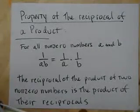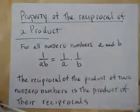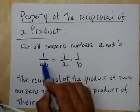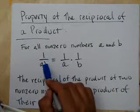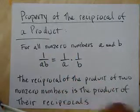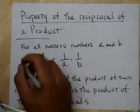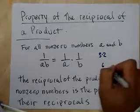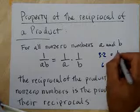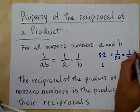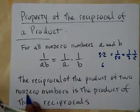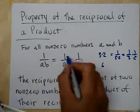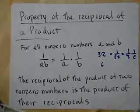Property of the reciprocal of a product. For all non-zero numbers a and b, the reciprocal of a times b — or 1 over ab — is the same thing as 1 over a times 1 over b. So the reciprocal of 3 times 2 is the same as 1 over 3 times 1 over 2. The reciprocal of a product is the product of the reciprocals of each individual factor.